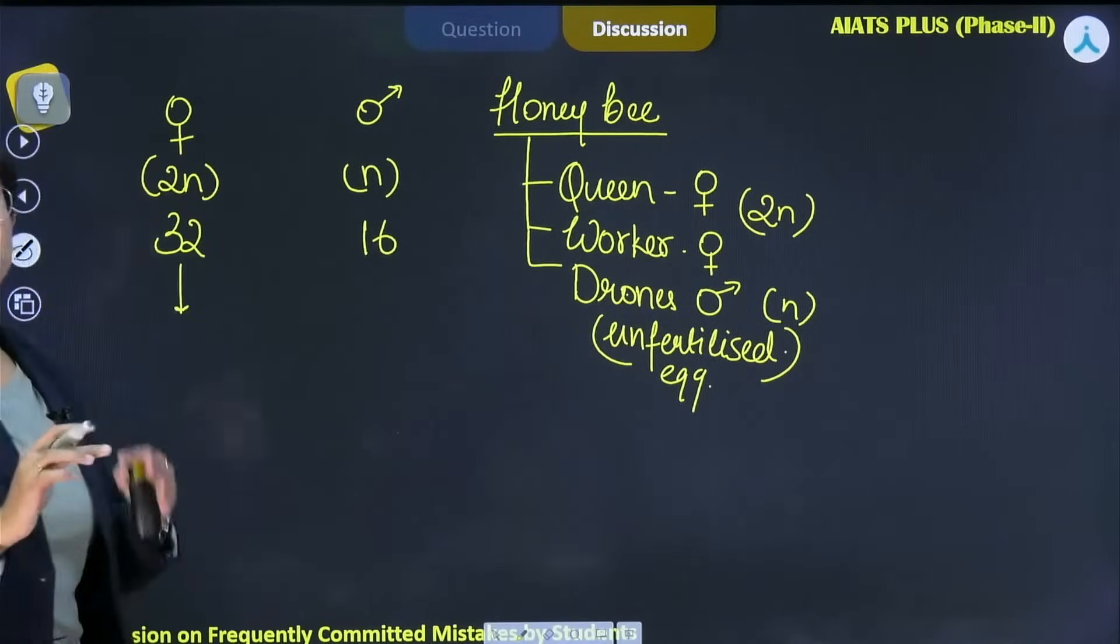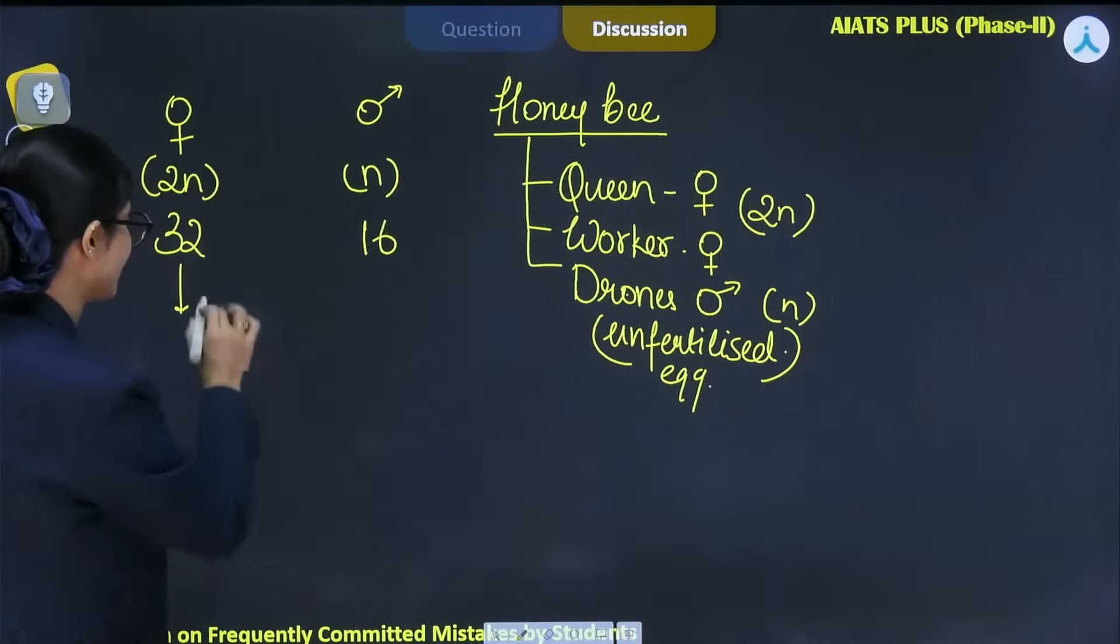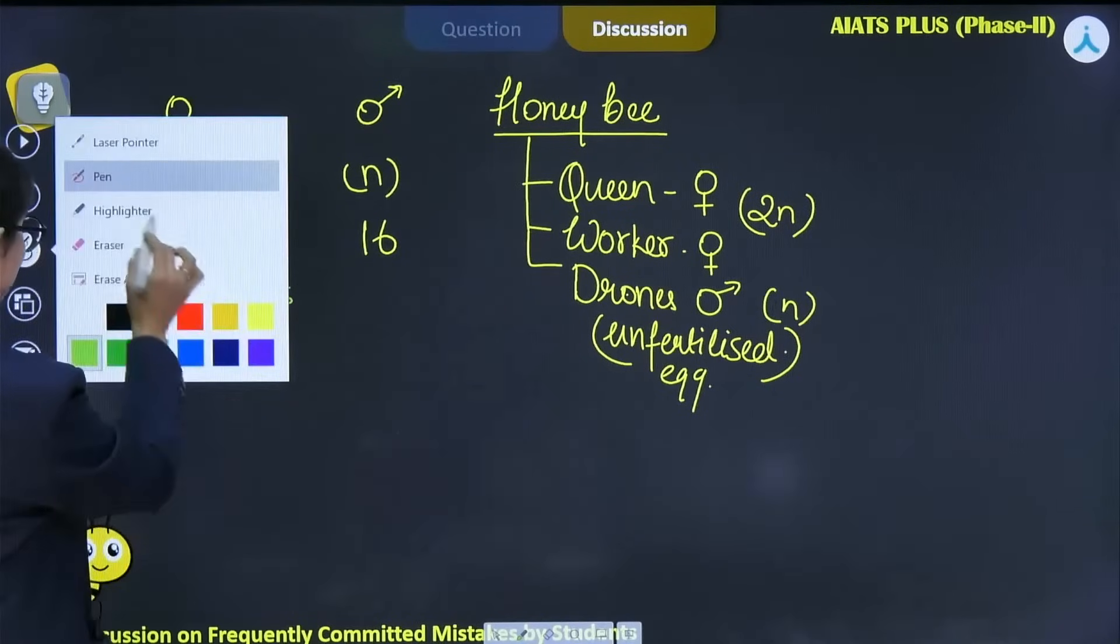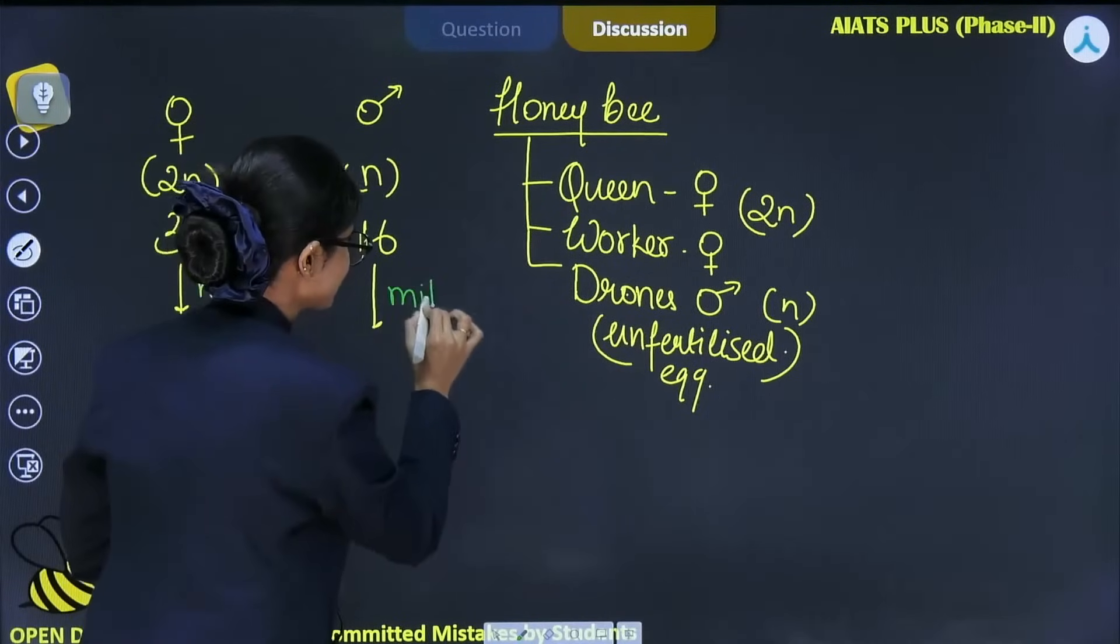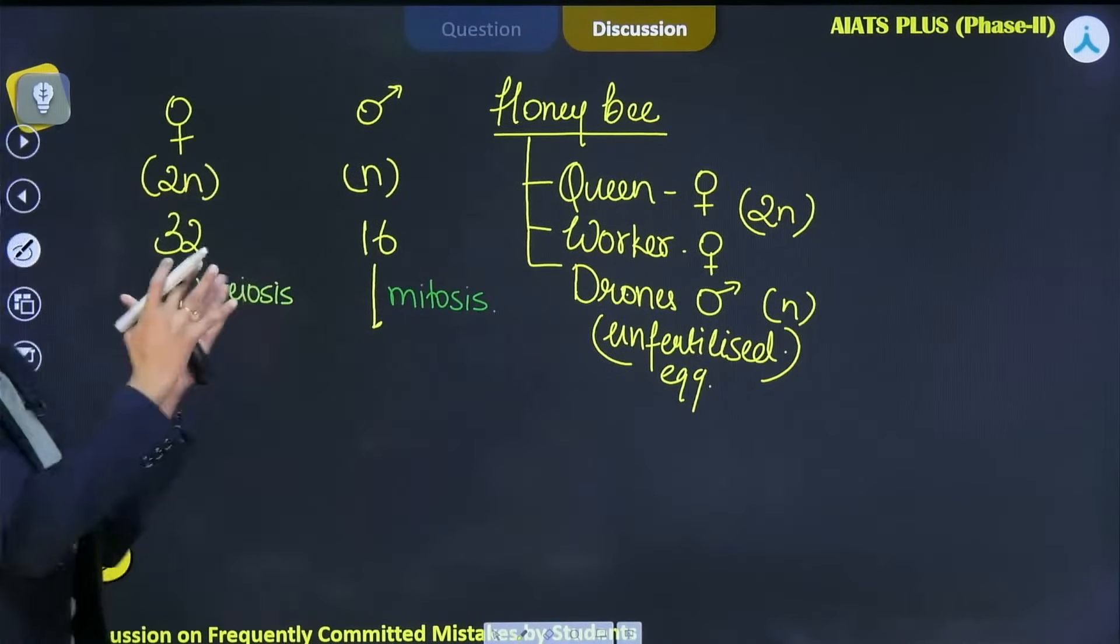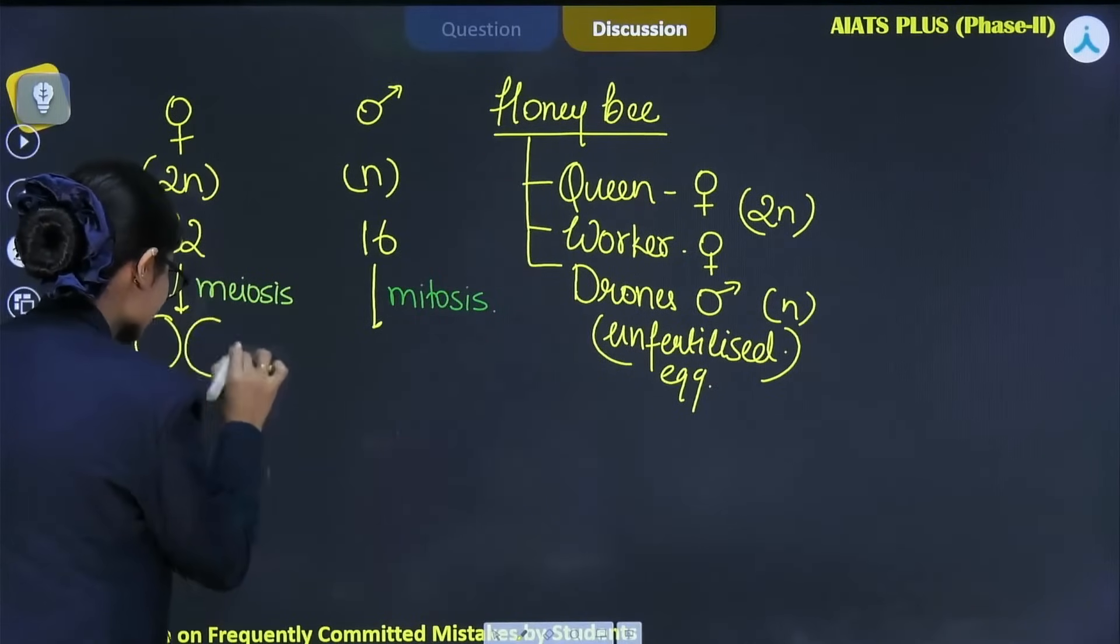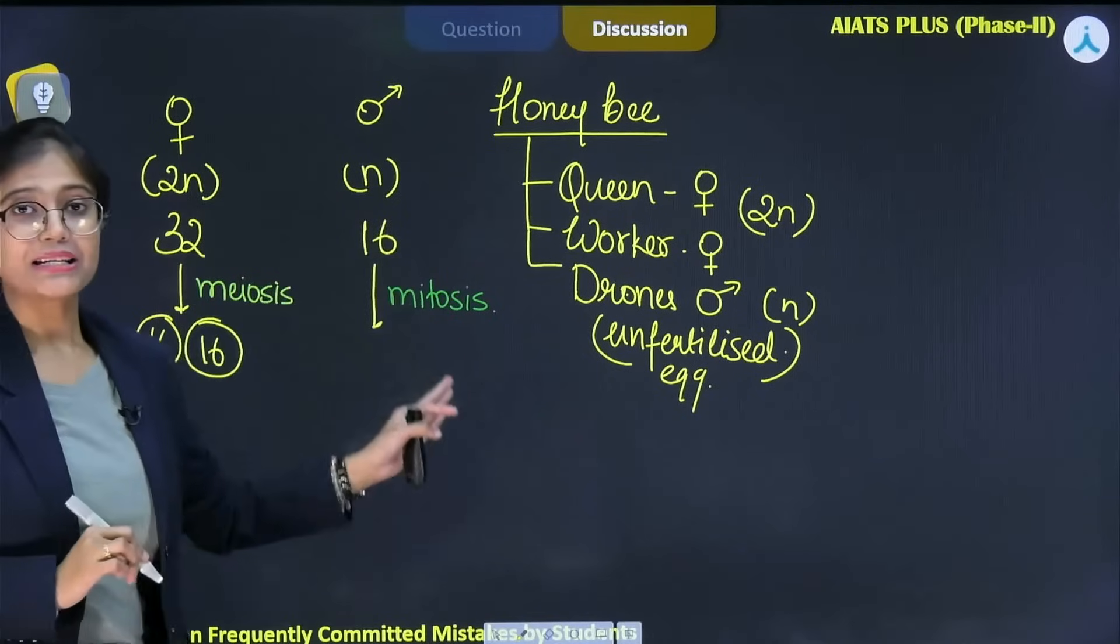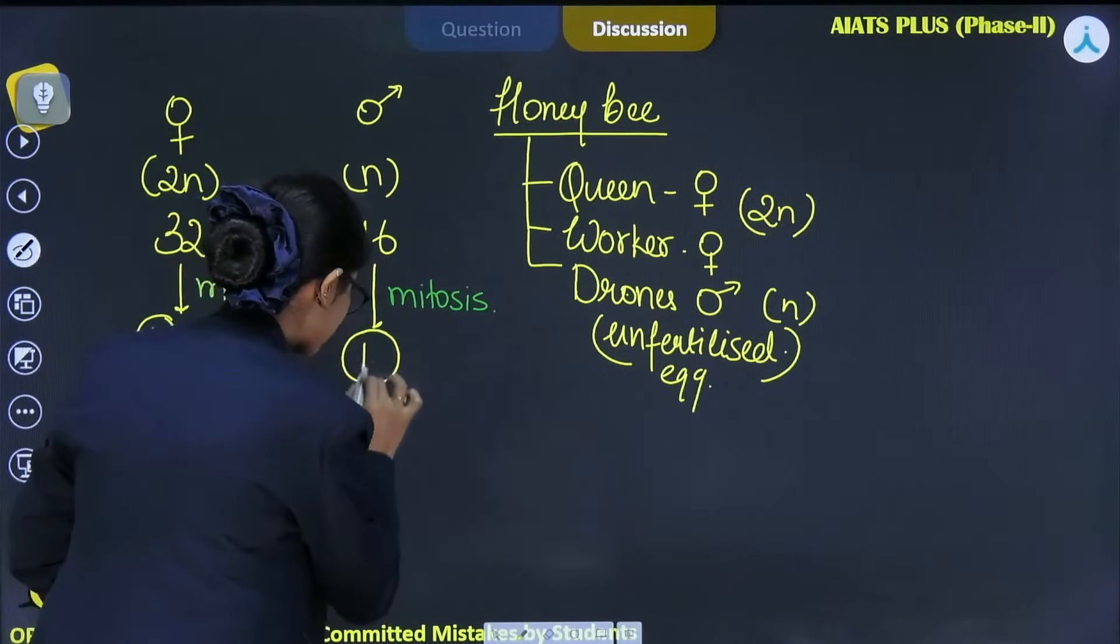Now, via a process of meiosis. Remember, here the process which is taking place for the formation of gamete in the female is meiosis. Meiosis. And if we talk about in males, then from the process of mitosis. From the process of mitosis, it will form the gamete. Once the meiosis will take place which is the reductional division, that means the gamete formed will have 16 chromosomes like this. As male is dividing its gamete via the process of mitosis which is the equational division, that means the gamete will have 16 chromosomes only.